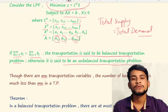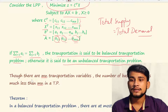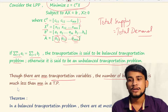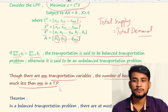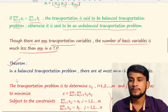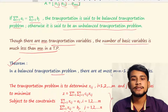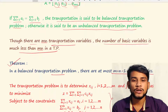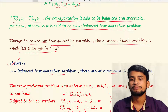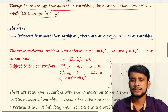Although there are m×n transportation variables, the number of basic variables is much less. There is an important theorem: in a balanced transportation problem, there are at most m + n − 1 basic variables. This is the most important theorem of the transportation problem.